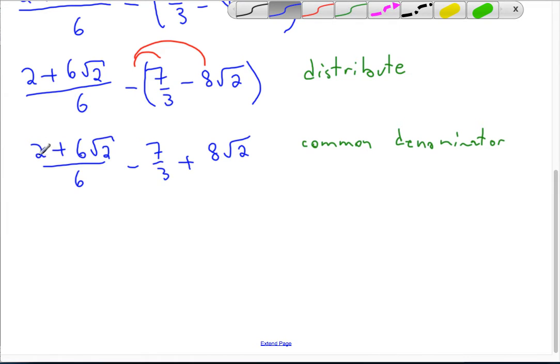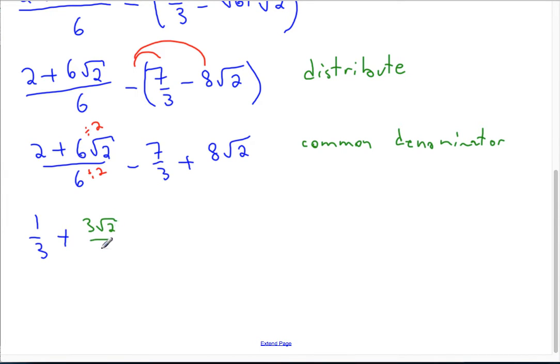2 and 6 reduce to 1 third. Here, 6 and 6 - I want the common denominator of 3. So therefore, I'm going to divide both by 2, and I'm going to get 3 root 2 over 3.